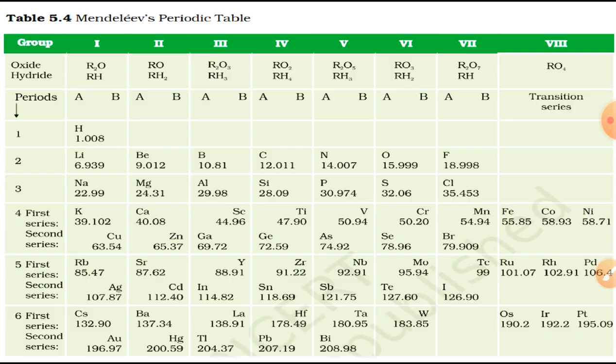Let's understand the various criteria selected by Mendeleev to classify these elements. He examined the relationship between atomic mass of elements and their physical and chemical properties. Among chemical properties, he concentrated on the compounds formed by elements with oxygen and hydrogen, as they were very reactive and formed compounds with almost all elements. He took the formula of hydrides and oxides formed by an element as one of the basic properties for its classification.